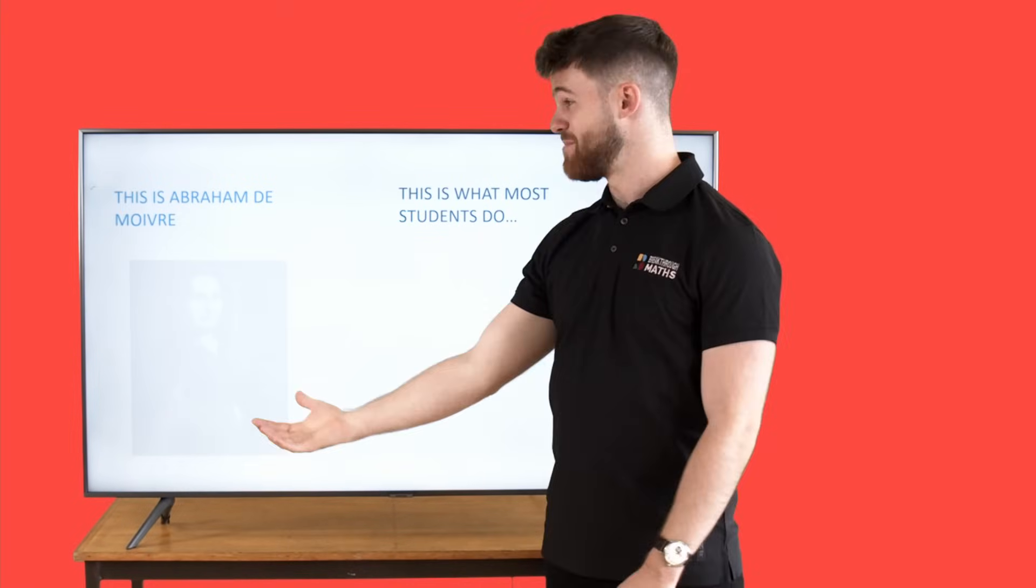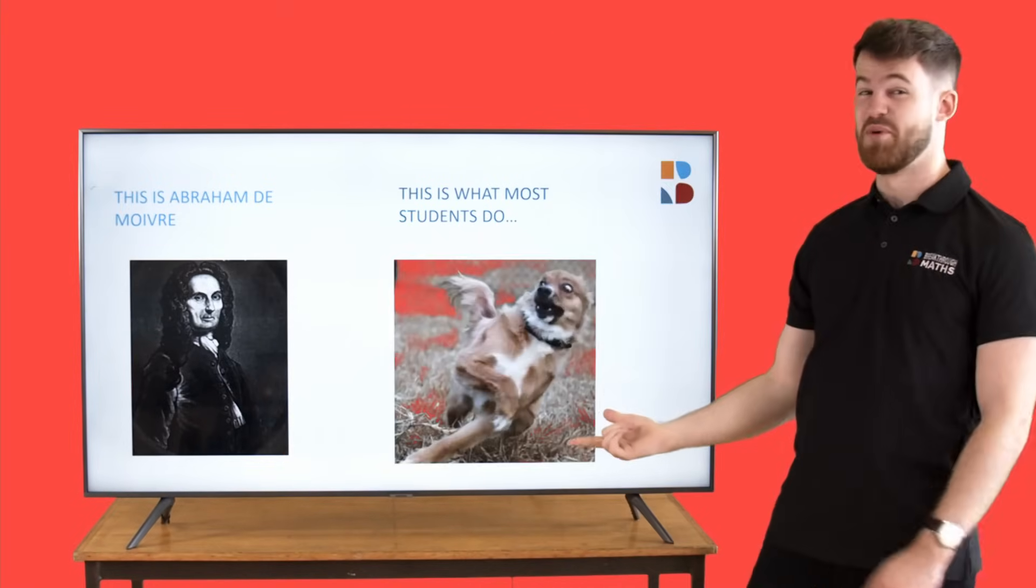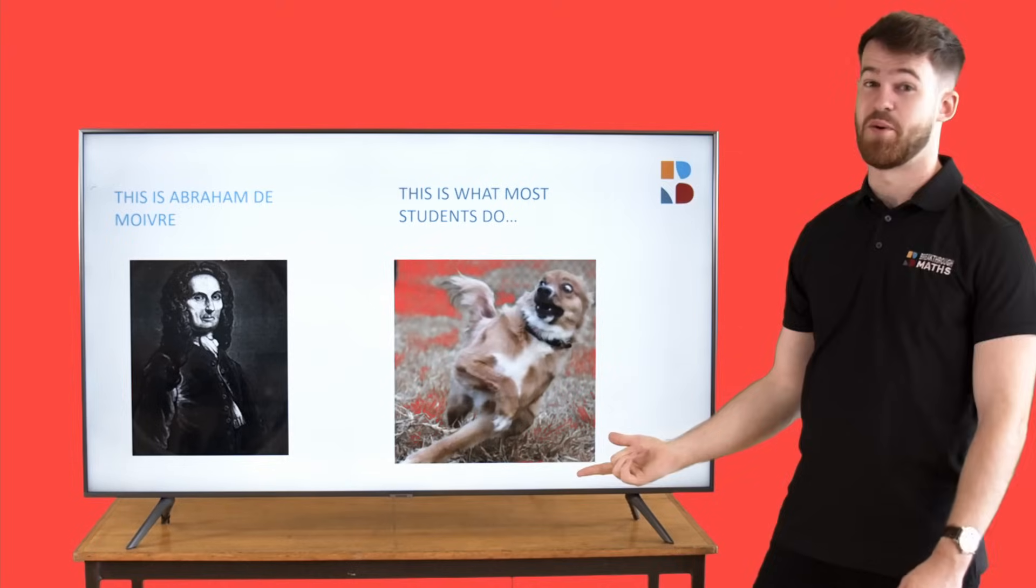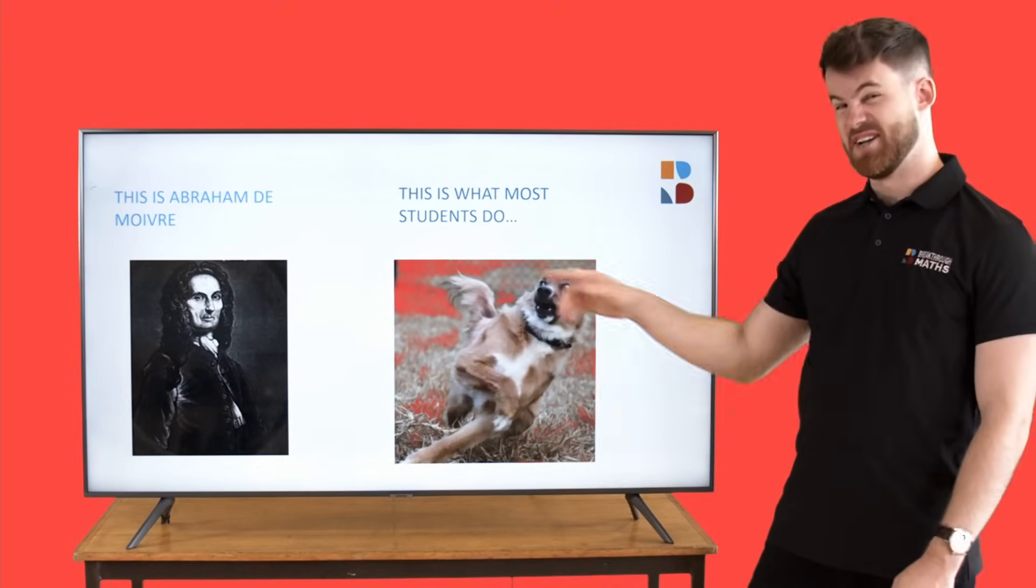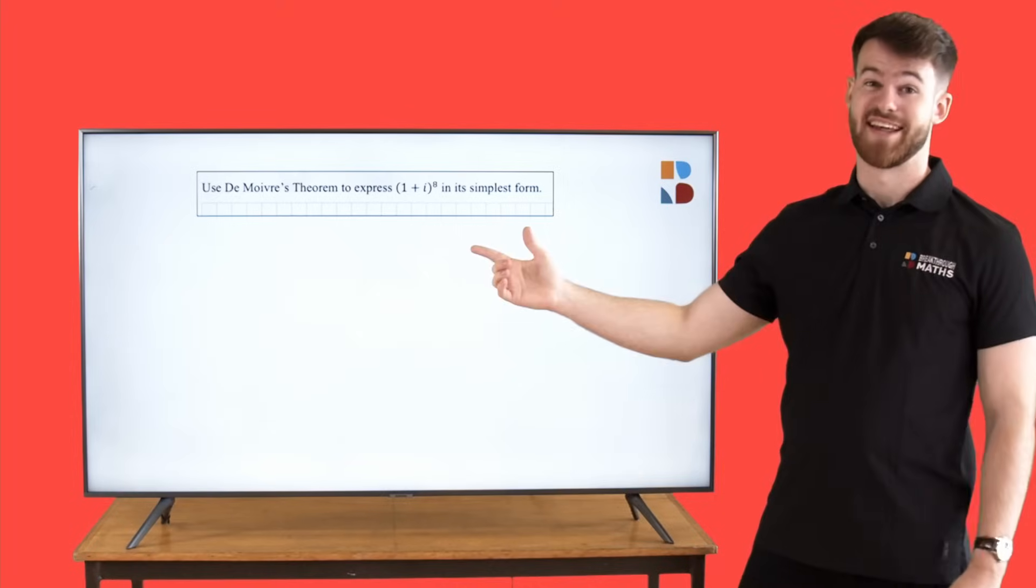This is Abraham De Moivre, and this is what most students do when they see his name pop up on an exam paper. I'm going to show you how to avoid this, so let's look at an example.